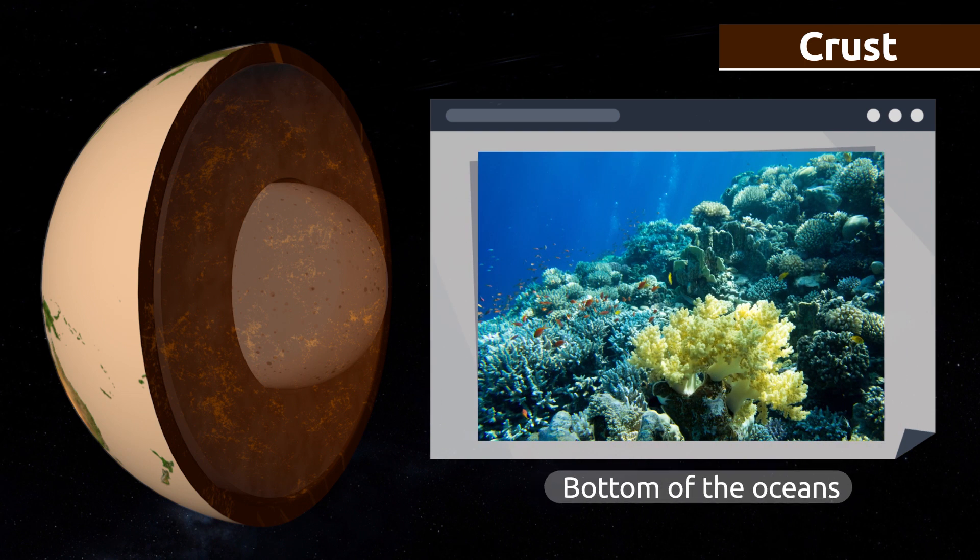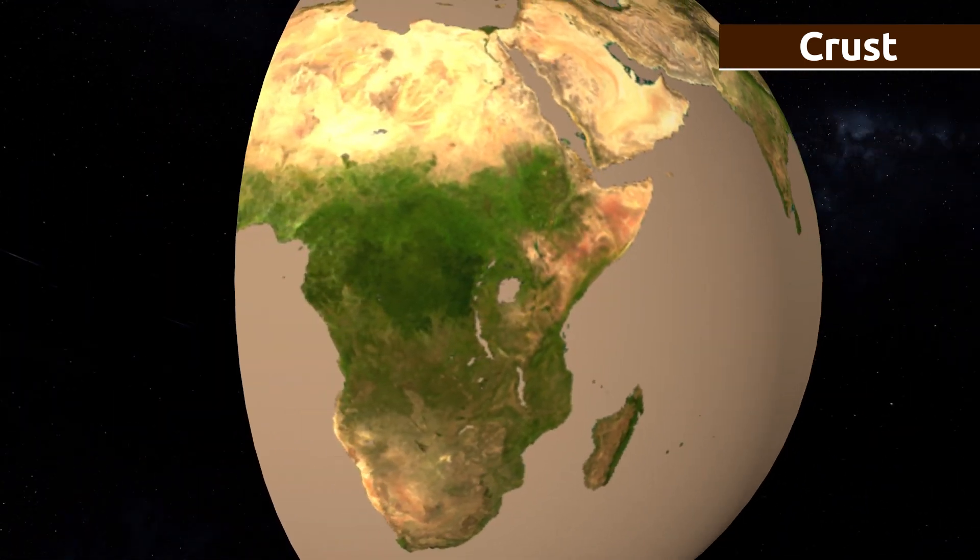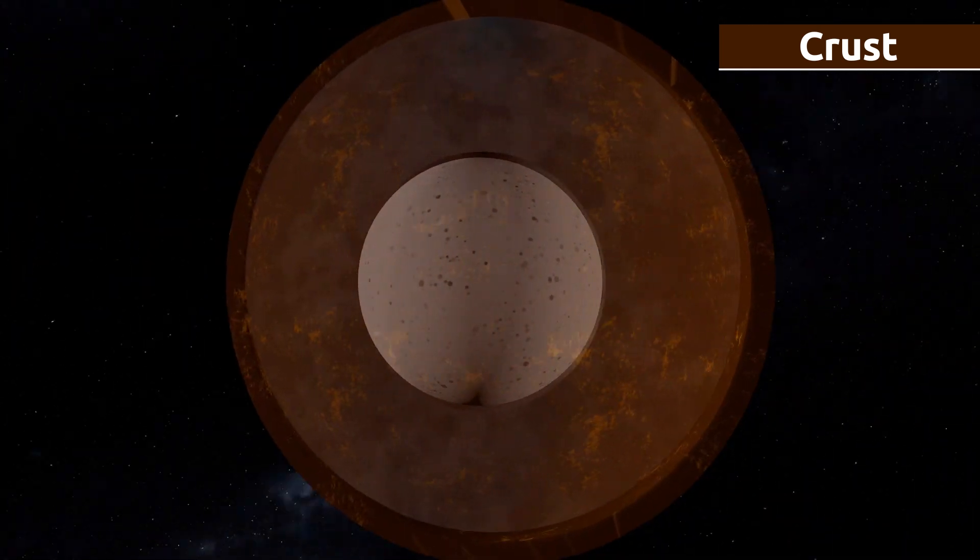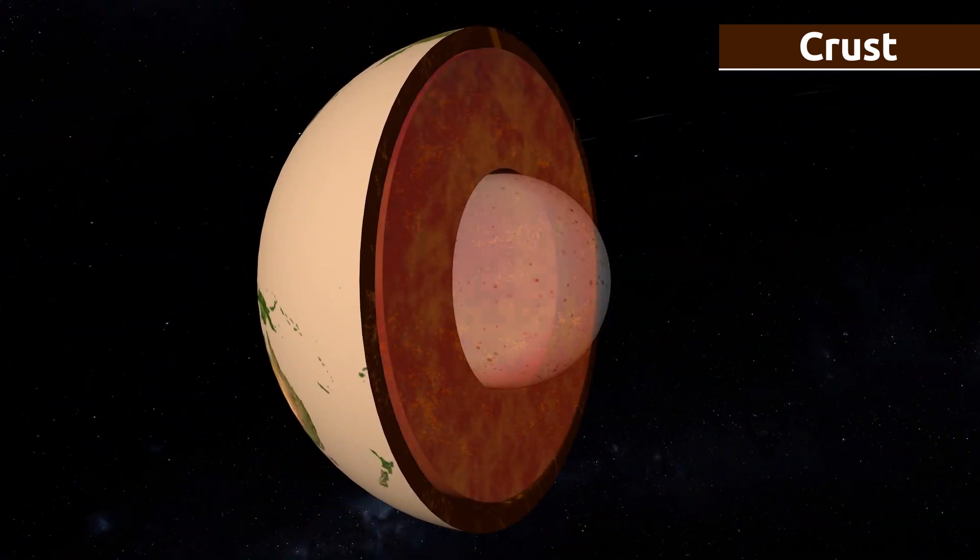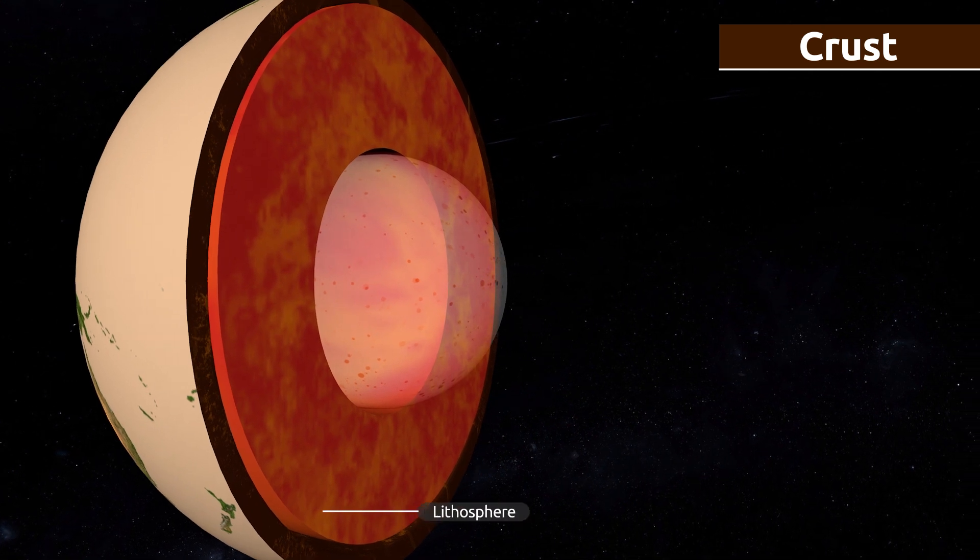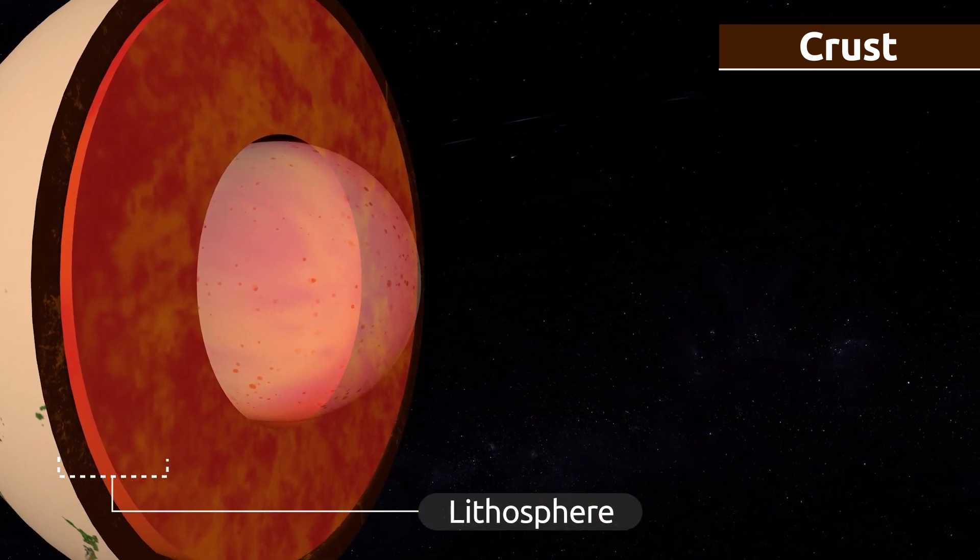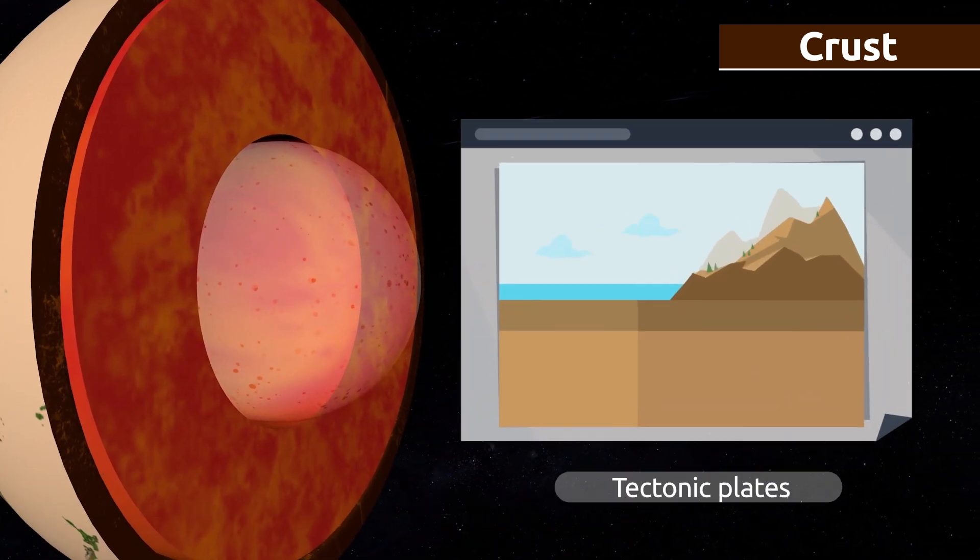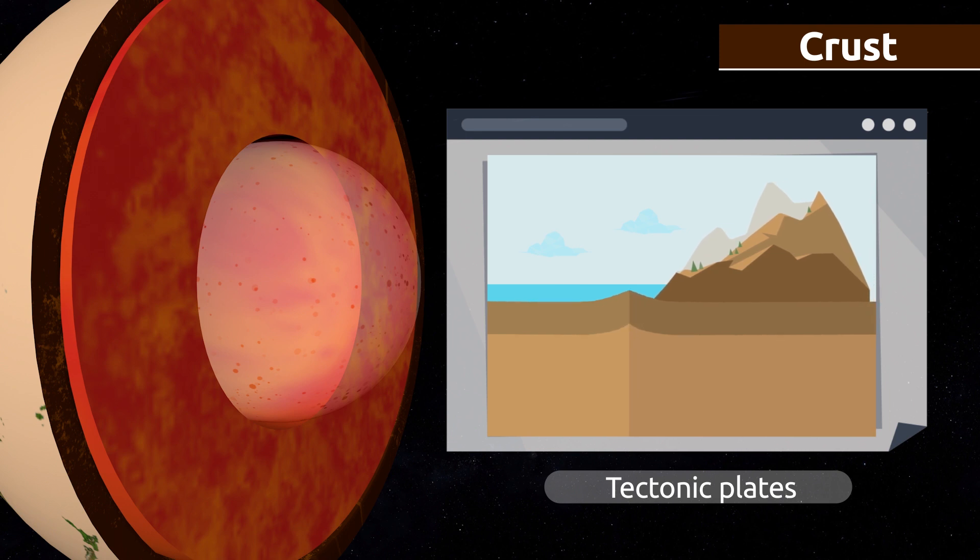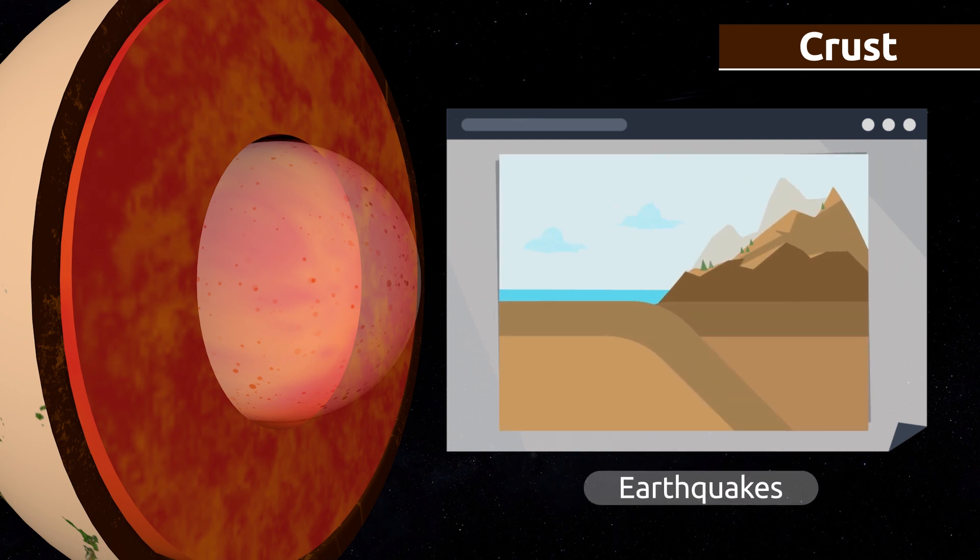The geosphere is broken up into several tectonic plates. These make up the crust and also the mantle, and they are found in a layer called the lithosphere. Tectonic plates are constantly moving, molding the crust. Their movements cause earthquakes.